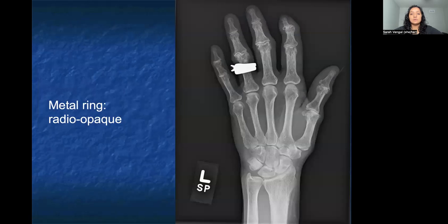In this example, we have a radiograph of a left hand. As you can see, the metal is something that appears as bright white, which is very typical for something that's radio-opaque. So this person has a radio-opaque object in a circular manner around their finger, also known as a ring.